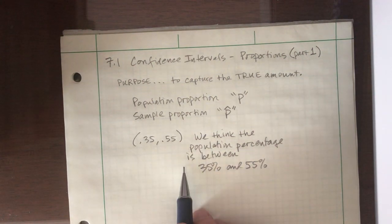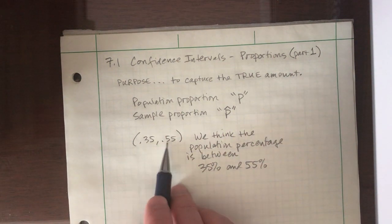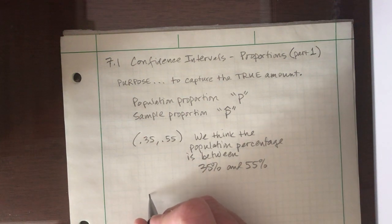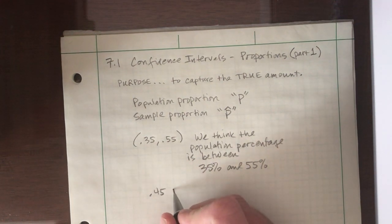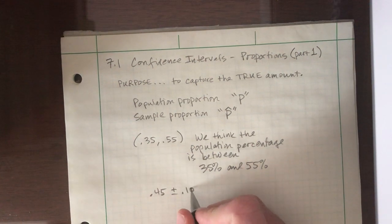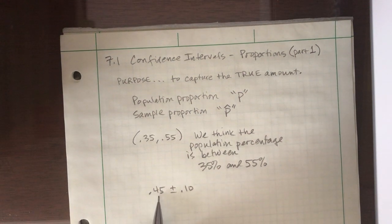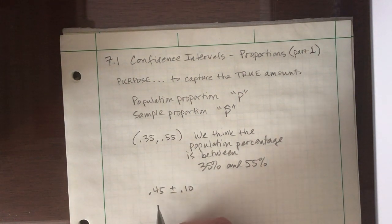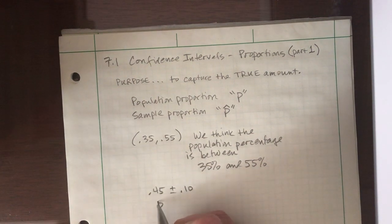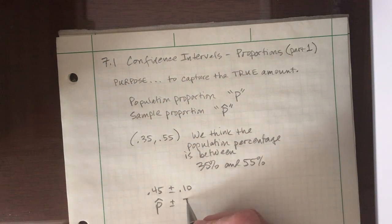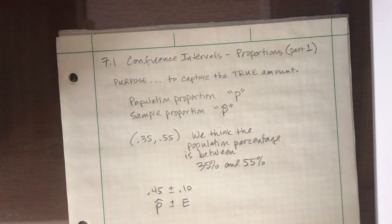But where did we get this? Well, we know that this confidence interval was built around a point estimate, 45%, and a margin of error of 10%. 45 minus 10 is 35. 45 plus 10 is 55. So we call this the point estimate in the last video. But now we can call it the sample proportion, p hat. And my margin of error, we're going to give it just the capital letter E to stand for error.